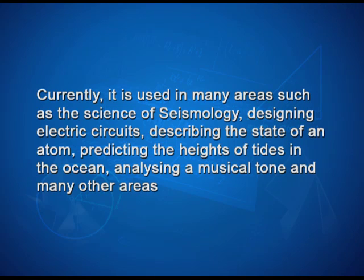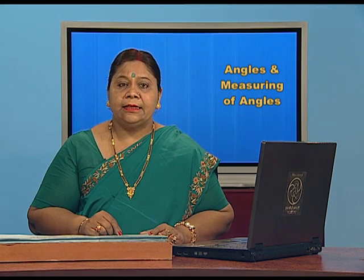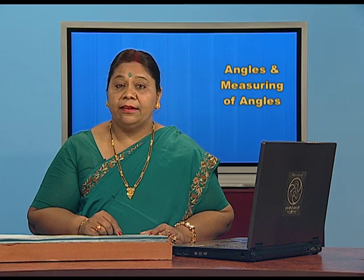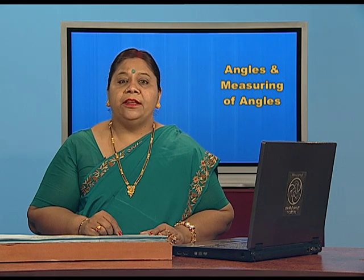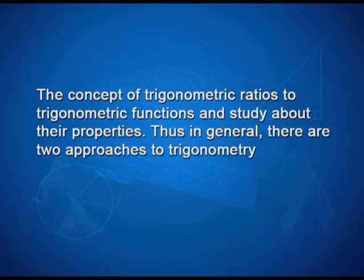Currently it is used in many areas such as the science of seismology, designing electric circuits, describing the state of an atom, predicting the height of the tides in the ocean, analyzing a musical tone, and many other areas. In earlier classes, we have studied the trigonometric ratios of acute angles as the ratio of the sides of a right angle triangle. We have also studied the trigonometric identities and application of trigonometric ratios in solving problems related to height and distances. In this chapter, we will generalize the concept of trigonometric ratios to trigonometric functions and study their properties.